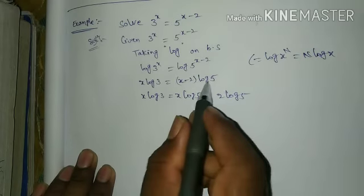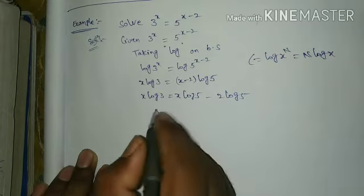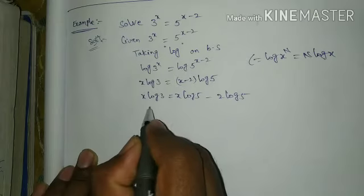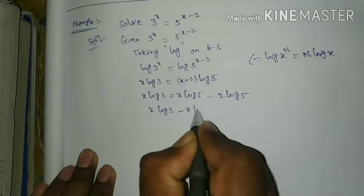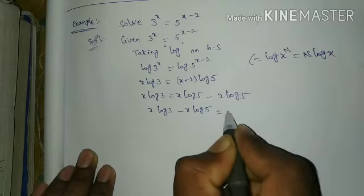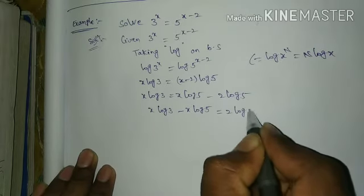Multiplication this one here: x log 5 minus 2 log 5. x log 3 minus x log 5 equal to log 5.